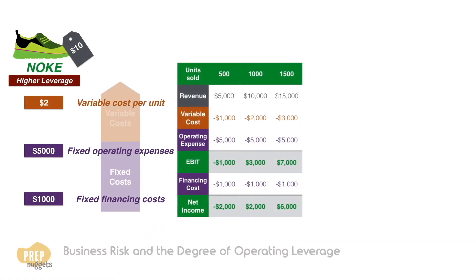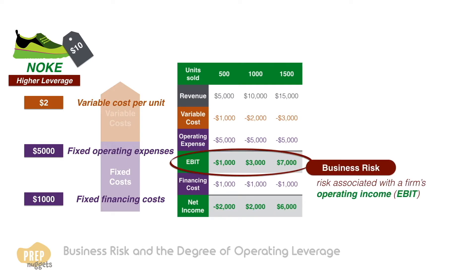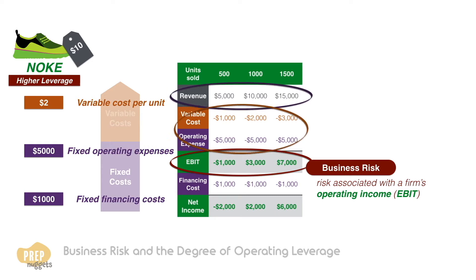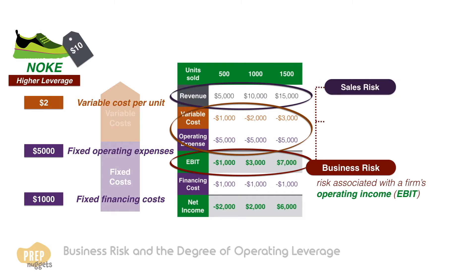Let's bring back our example of NOKEY from our last lesson. We can infer quite a bit on business risk from this. Business risk refers to the risk associated with a firm's operating income or EBIT. As you can see from this example, EBIT can vary by quite a lot, which is a substantial risk to the company. As EBIT is the result of the firm's sales and the expenditures necessary to produce the sales, these two are the main components of business risk.